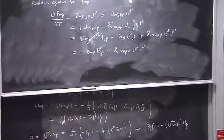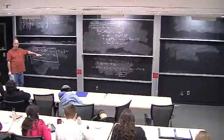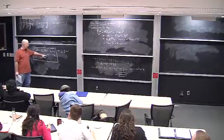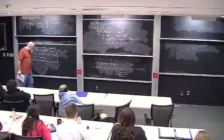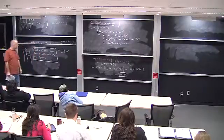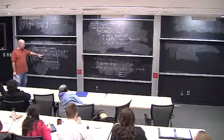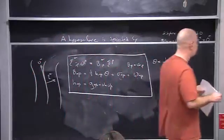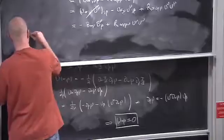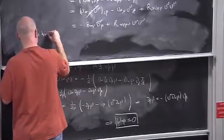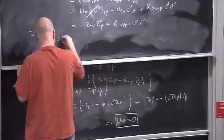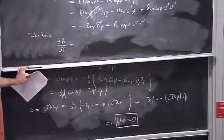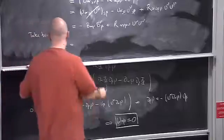What I'm going to do is just do one third of that program: work out an evolution equation for theta by taking the trace of this equation. If I take the trace, and recall that the trace of B is theta, on the left-hand side I get dθ/dτ. After taking the trace, the tensor becomes a scalar so I don't need to distinguish between covariant and ordinary derivative.